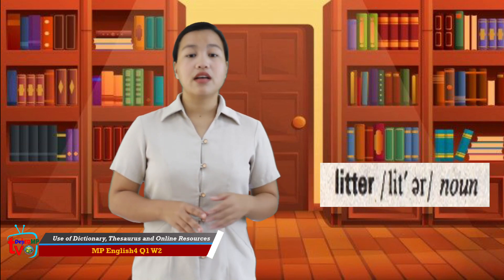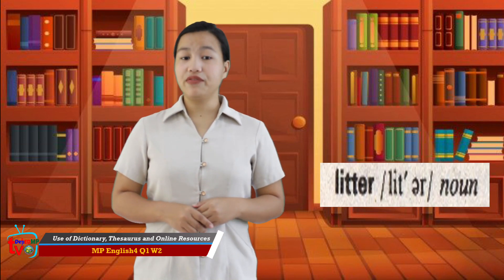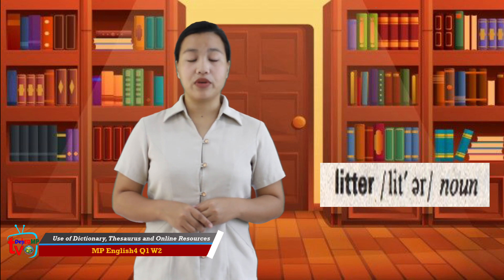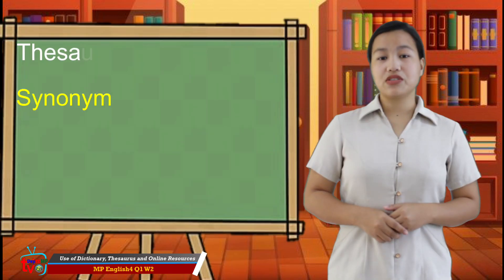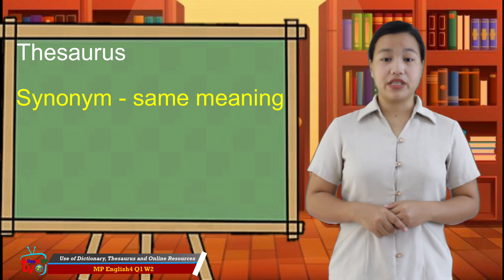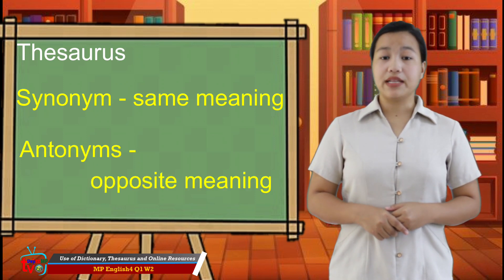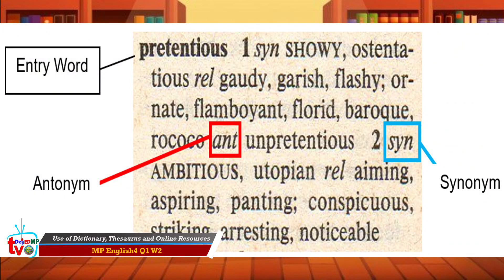Notice that the entry word litter has two different meanings based on how it was used in the sentence. Now that you know about the dictionary, let's talk about the thesaurus. Are you ready? The thesaurus contains words that are similar — synonyms — and opposite — antonyms — of the word you are looking for.